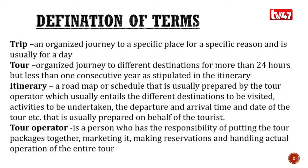Next we'll be defining an itinerary. It is a road map or a schedule that is usually prepared by the tour operator, which entails the different destinations to be visited, the activities to be undertaken, the departure and arrival time, and the date of the tour — prepared on behalf of the tourist. Basically, an itinerary is a work plan or schedule prepared by the tour operator to act as a guiding factor when they're out on the safari.